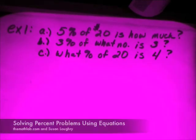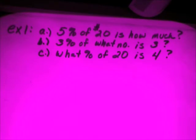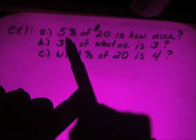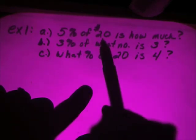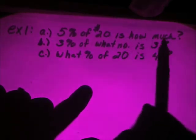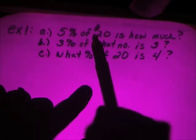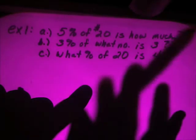There are three different kinds of percent problems that exist in the world, and we're going to use algebra to solve them. The first type of problem is when you know the percent and you know the original amount, but you don't know what the final answer is. This is the kind that you see in elementary school where you just multiply, straightforward.